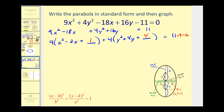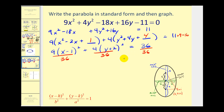These are now perfect square trinomials. Factoring gives 9(x − 1)² + 4(y + 2)² = 11 + 9 + 16 = 36. Dividing everything by 36 and simplifying: (x − 1)²/4 + (y + 2)²/9 = 1. This is our standard form.